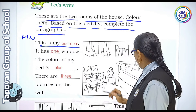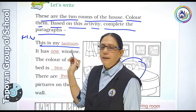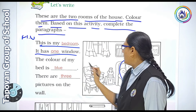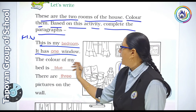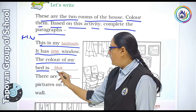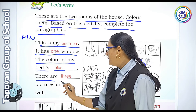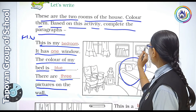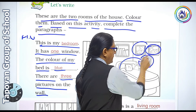This is my bedroom. It has one window. The colour of my bed is blue. There are three pictures on the wall — Wall mein kitni picture hain? Toh 3 hain — 1, 2, and 3.